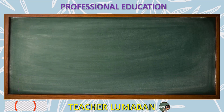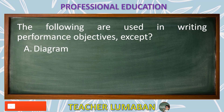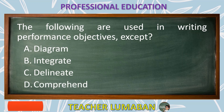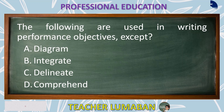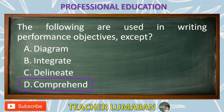The following are used in writing performance objectives, except: Letter A: Diagram. Letter B: Integrate. Letter C: Delineate. Letter D: Comprehend. The correct answer is Letter D, Comprehend. Comprehend is not used in writing performance objectives.